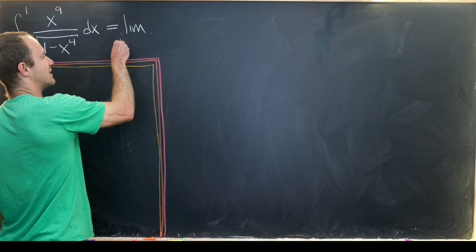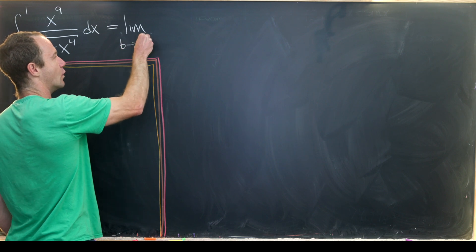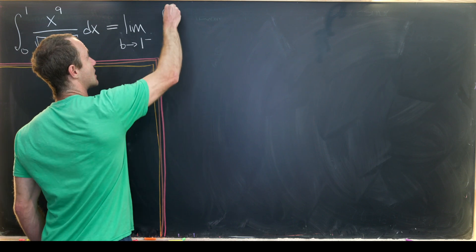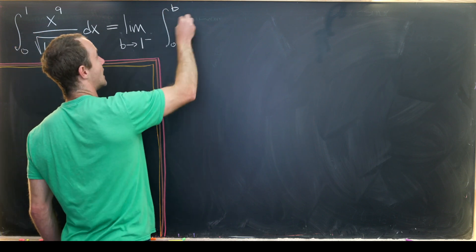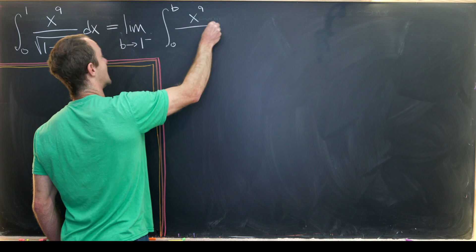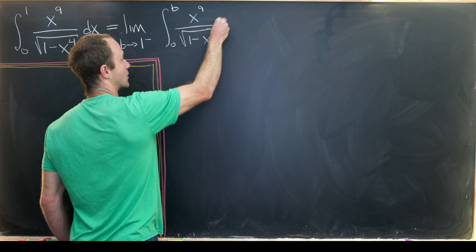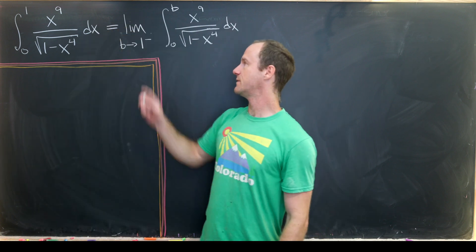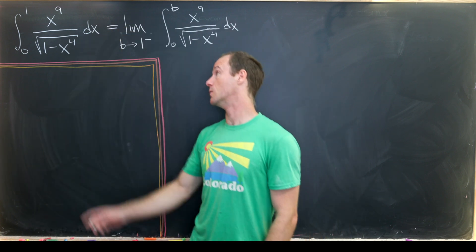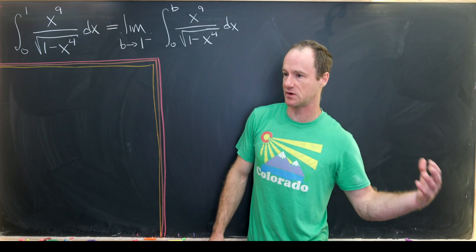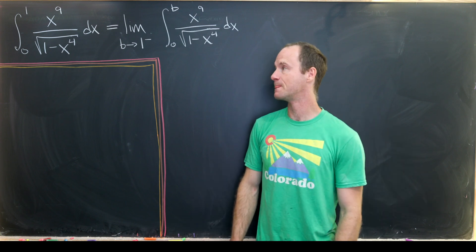This is the limit as b approaches 1 from below of the integral from 0 to b of x^9 over the square root of 1 - x^4 dx. It's from below because we're on the interval from 0 to 1.